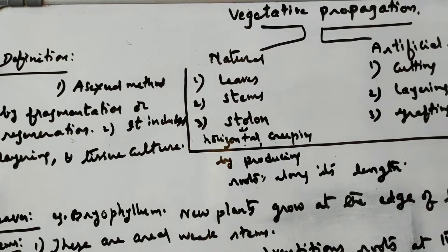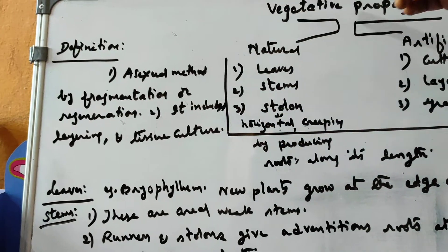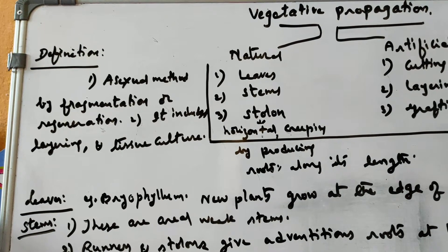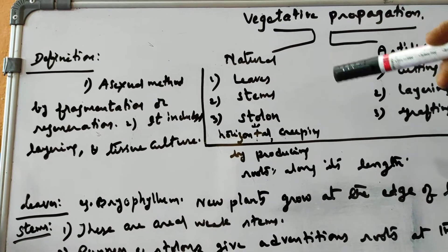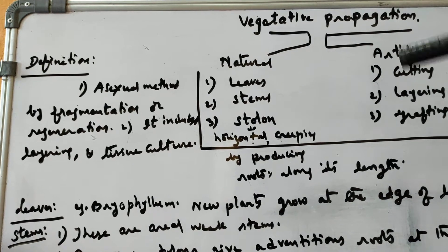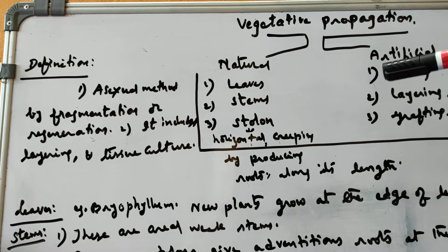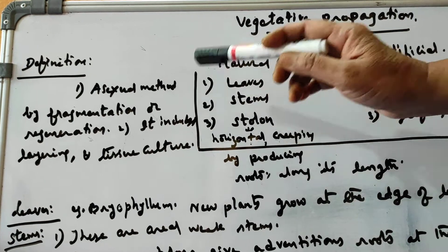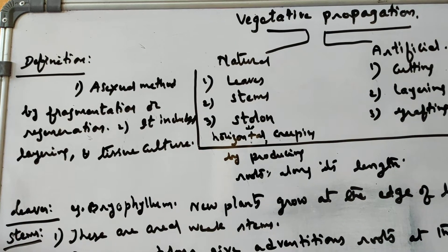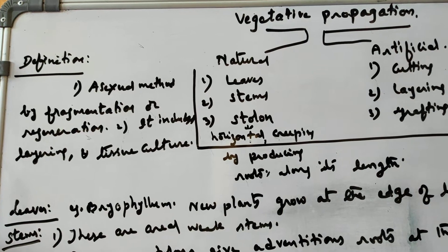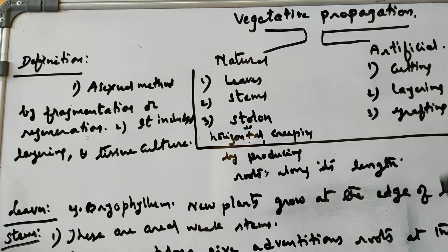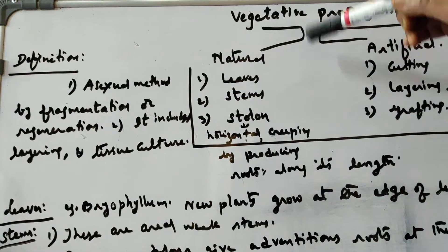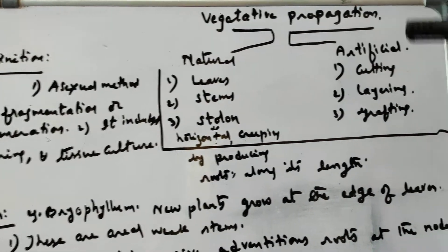Tissue culture means we take some cells or tissues from a plant and grow them in a medium with all the plant hormones, so that we can get a large number of new plants from the same plant at one time. This production of many saplings at once is where tissue culture is useful, along with layering.